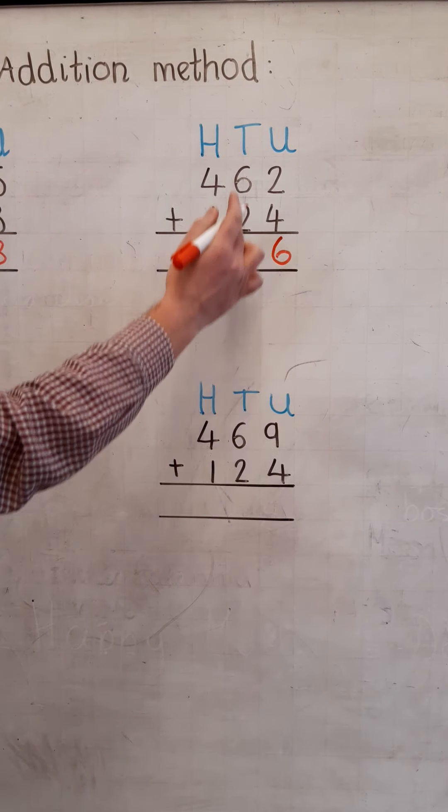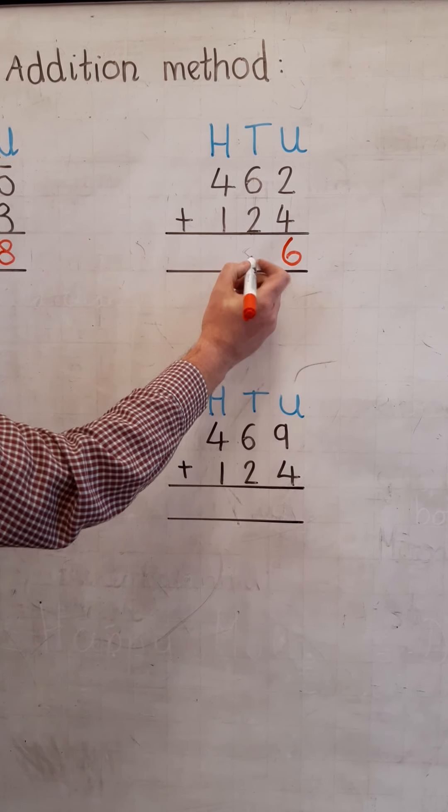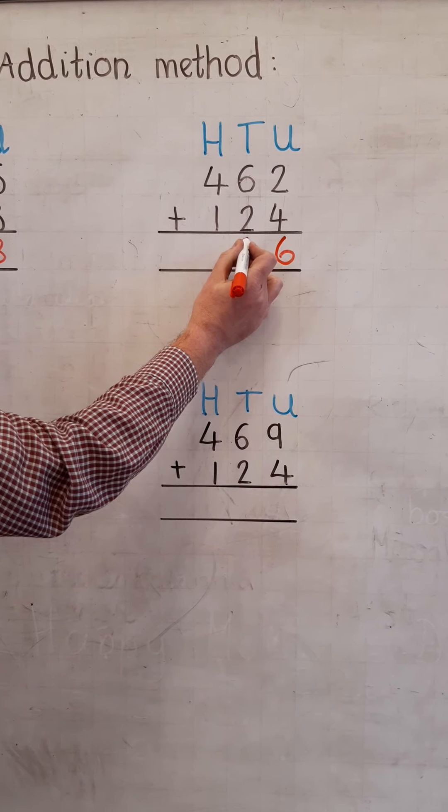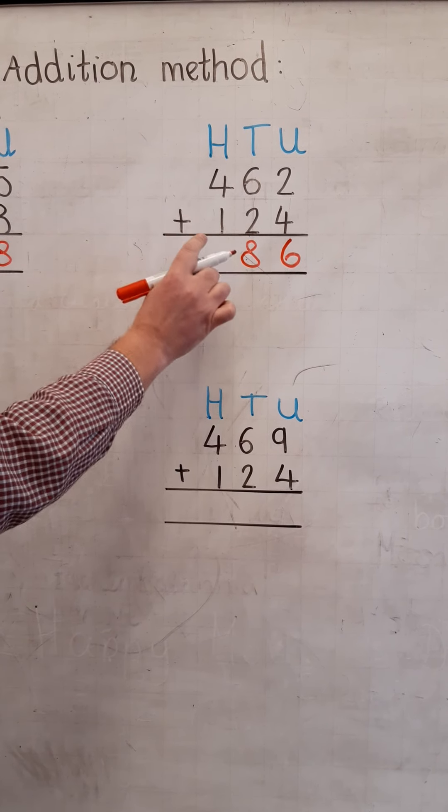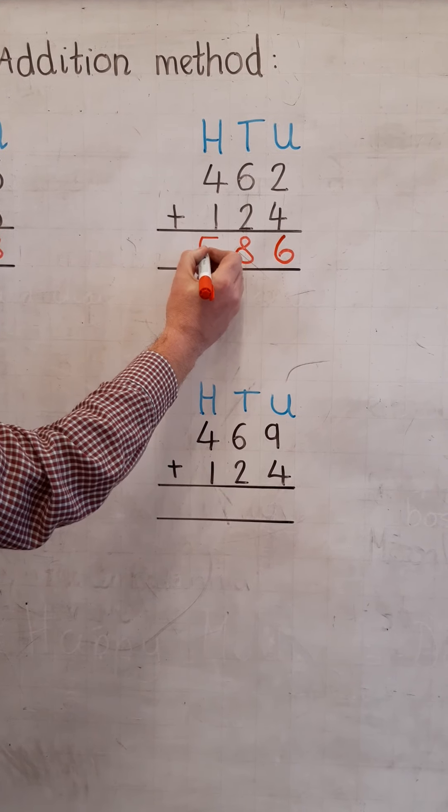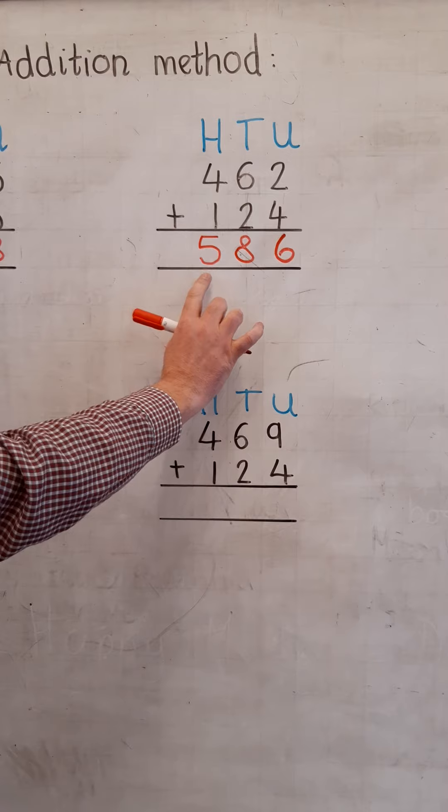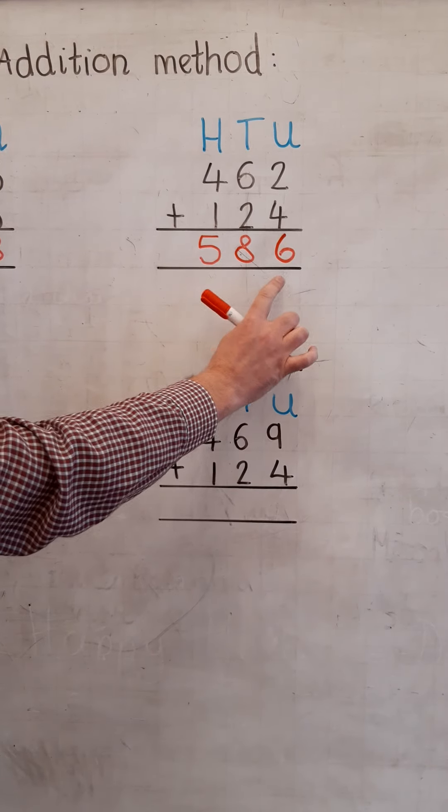We carry on to the tens. We have six tens, add two tens, makes eight tens. We carry on to the hundreds place with four hundreds, add one hundred, makes five hundreds and a total of five hundred and eighty-six.